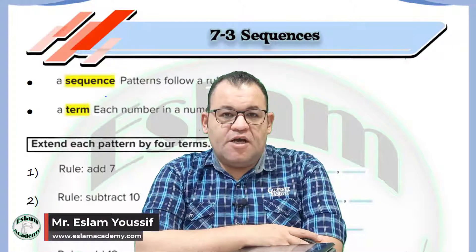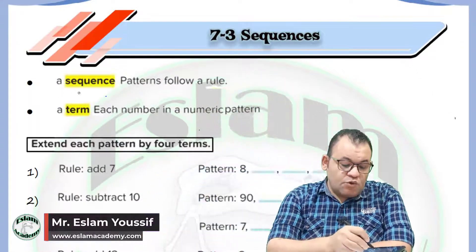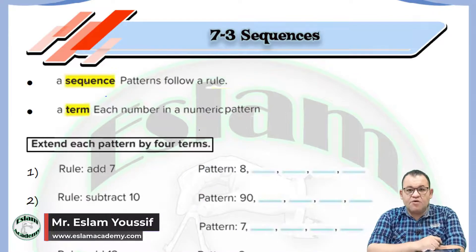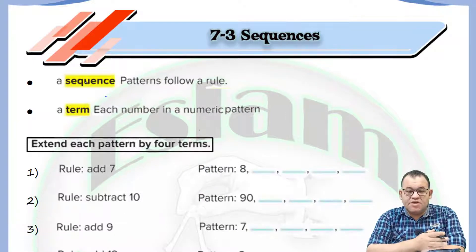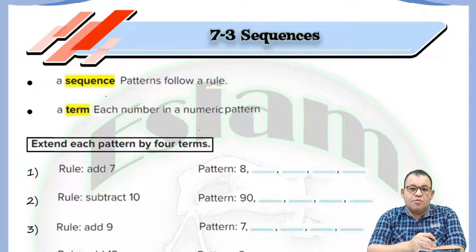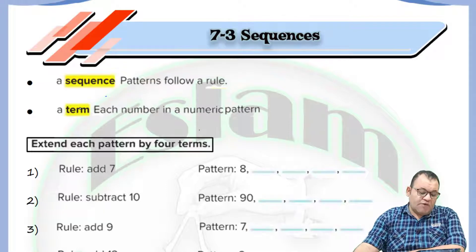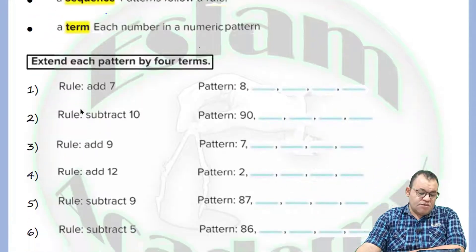Welcome back with a new math tutorial. In this video we'll talk about the sequence. A sequence is a pattern that follows a rule. I will give you the rule and you need to complete the pattern. The term is each number in the numerical pattern. As we talked before, we have a numerical pattern and a non-numerical pattern, so each number in the numerical pattern is called a term.